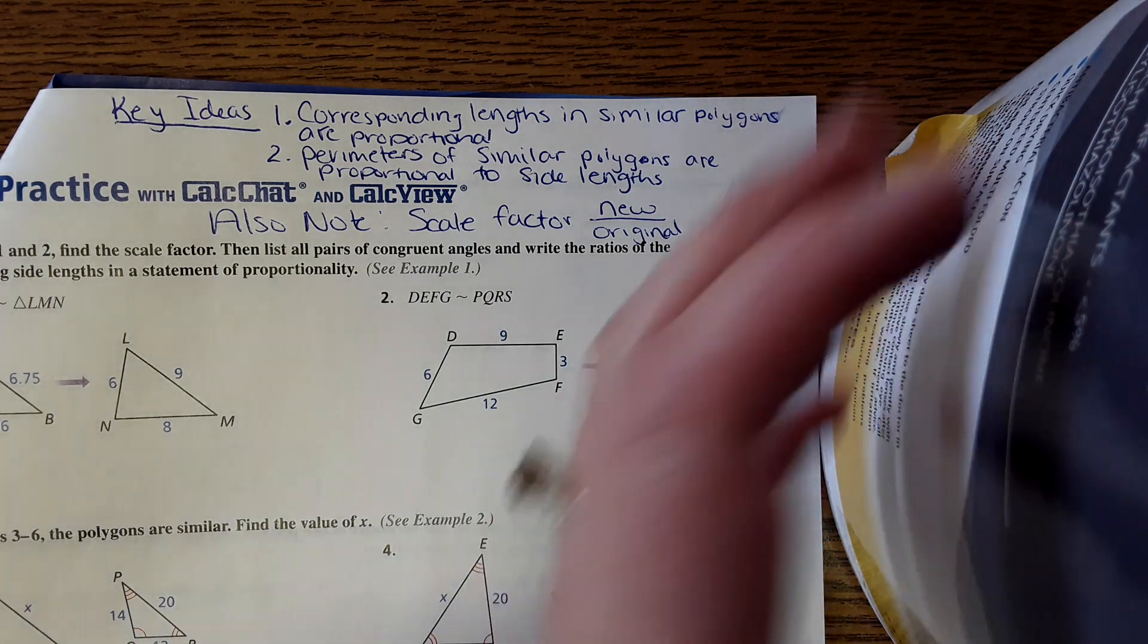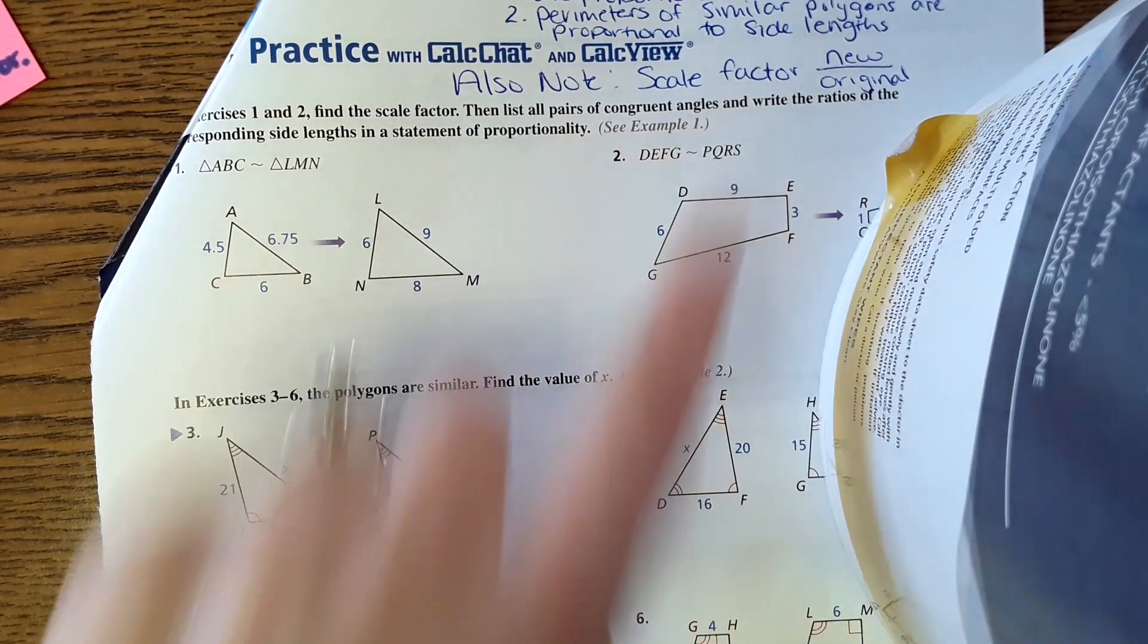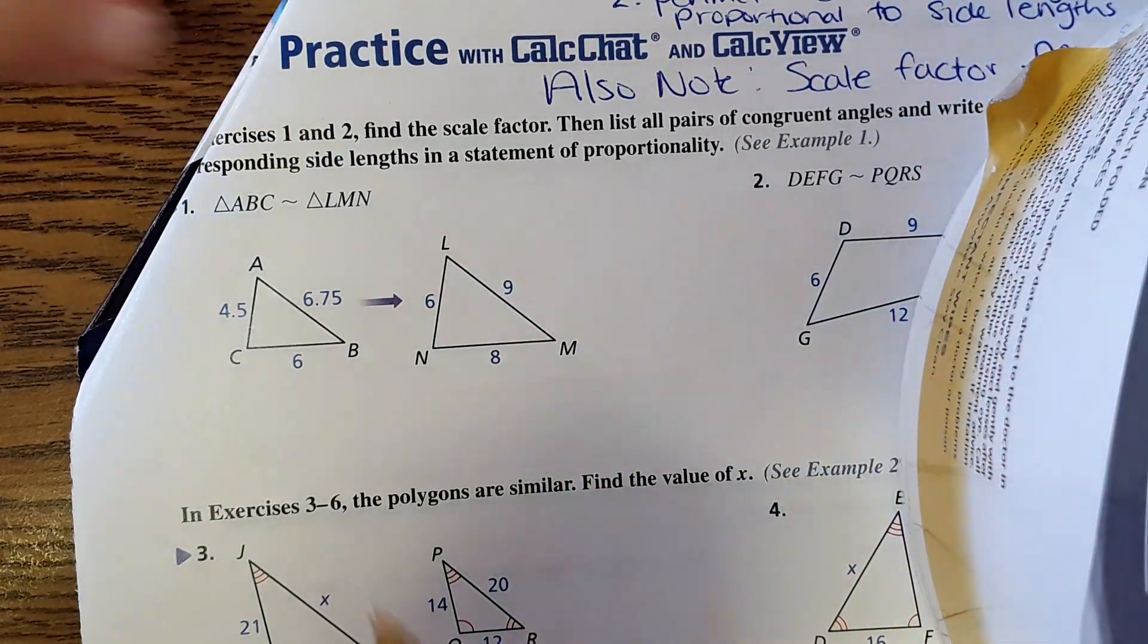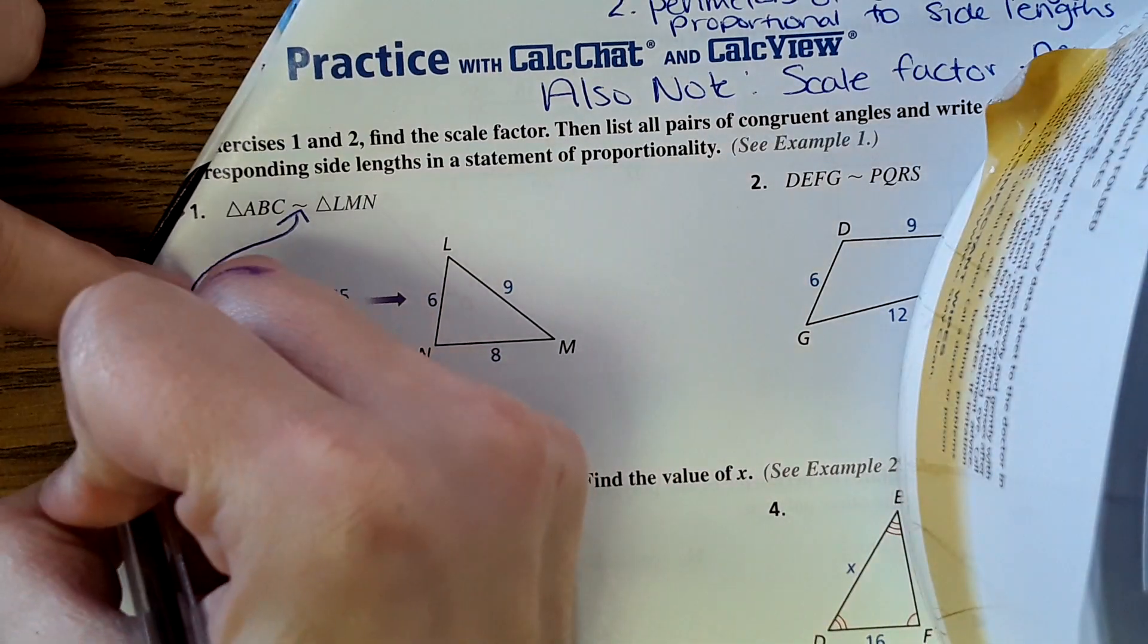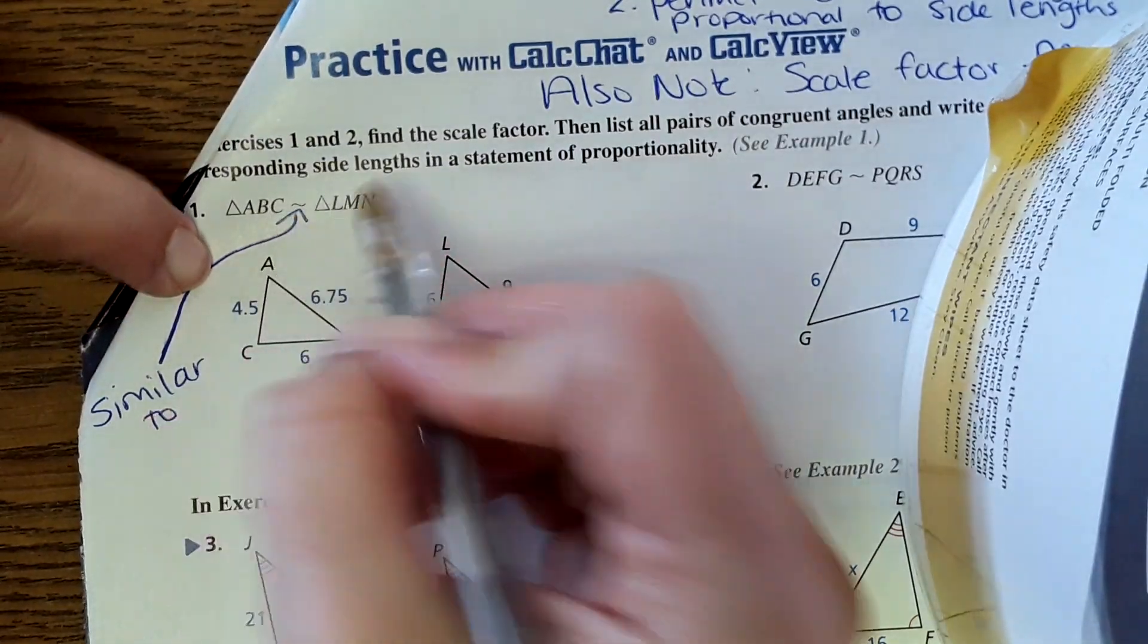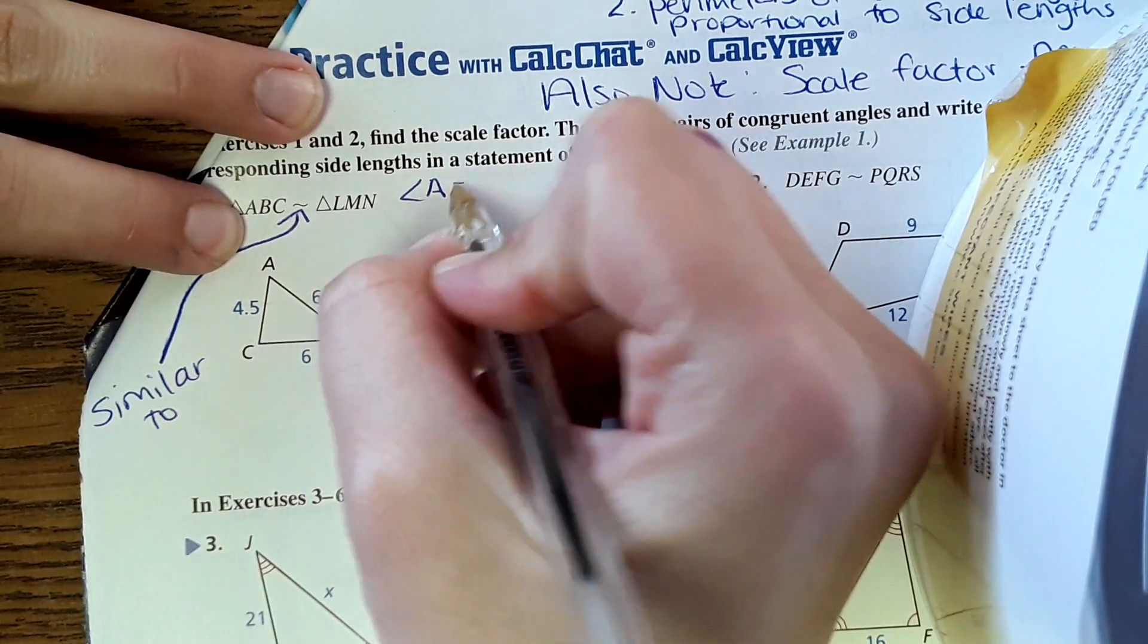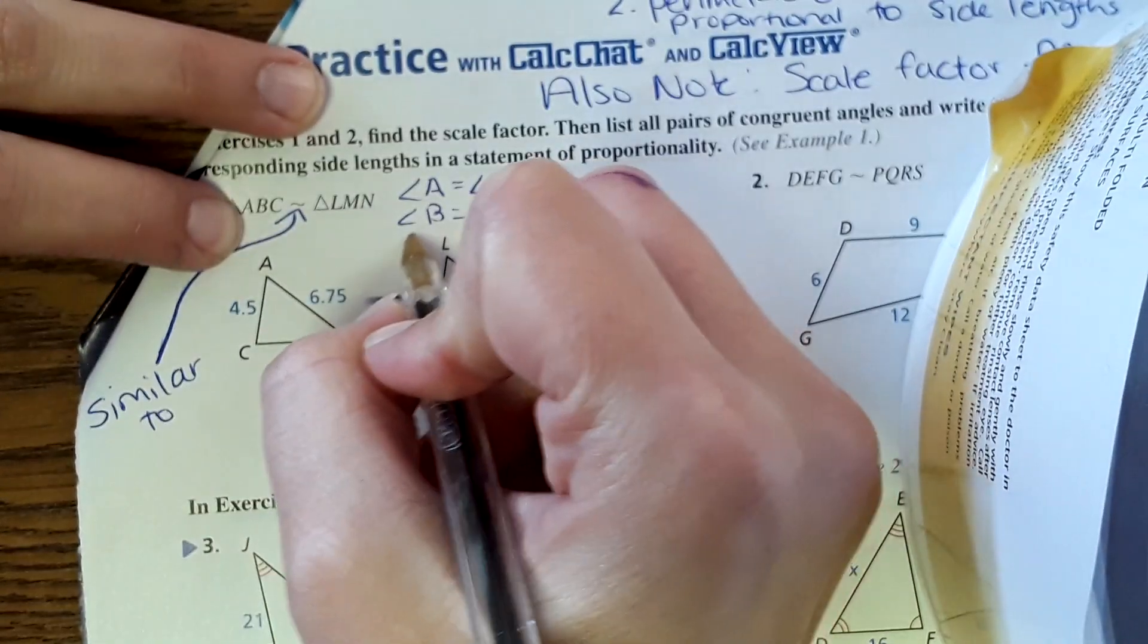Using those key ideas, let's look at the first problem. It says find the scale factor, then list all congruent angles and write the ratios of corresponding side lengths in a statement of proportionality. We're actually going to look at corresponding angles here. Something that's new is this squiggly line symbol - it means similar to. Triangle ABC is similar to triangle LMN. Just like with a congruent statement, everything corresponds here. So angle A equals angle L, angle B equals angle M, and angle C equals angle N.